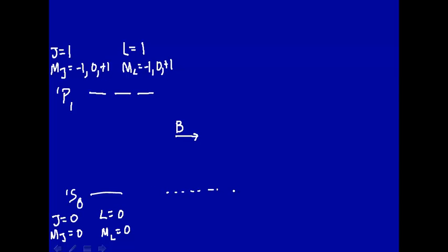Now let's put this in a magnetic field B. Since there's no angular momentum here, there's no interaction with a magnetic field, this energy level, the singlet S₀, will be unchanged in energy. However, here we have a splitting of energy levels, corresponding to M_L, or M_J if you want, equals plus 1, 0, and minus 1.